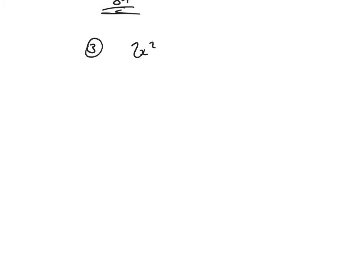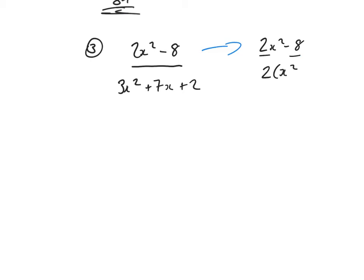In Example 3 we're going to factorise and simplify 2x squared minus 8 over 3x squared plus 7x plus 2. First, deal with the top: highest common factor — I can take out a common factor of 2, giving 2 bracket x squared minus 4. That's a difference of two squares, so that becomes bracket x plus 2 bracket x minus 2. Don't forget there's a 2 at the front.